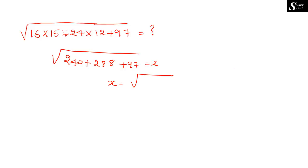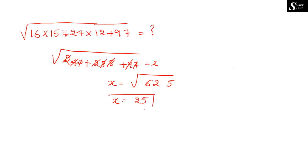Adding all these values: 240 + 288 + 97. Working through the addition step by step, the total comes to 625. So x is equal to the root of 625. We know that the square root of 625 is equal to 25. So the answer for this question is 25.